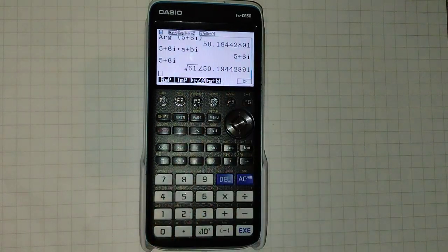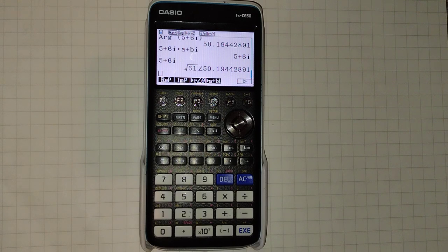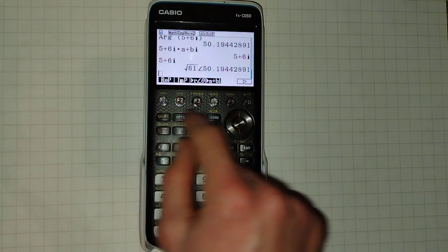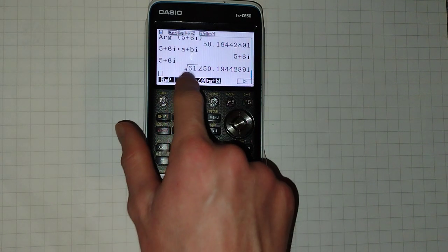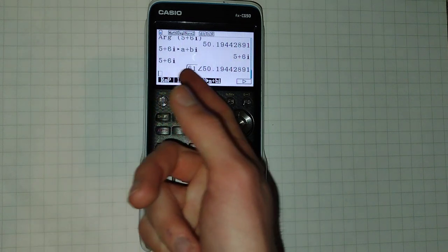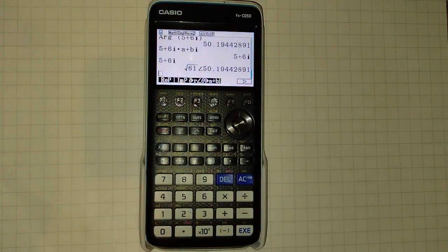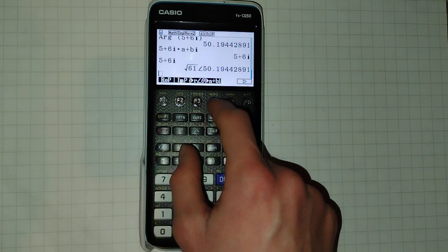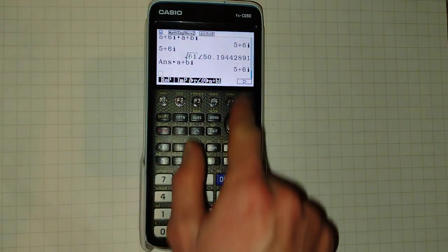Like so. And this means that sometimes you may be doing some calculation with complex numbers and you get it out in this form. Let's say this is the useful form you want to be in right now. Well, you can use this to convert it back.